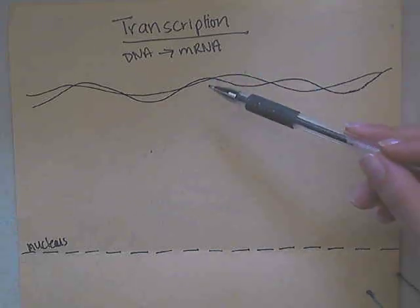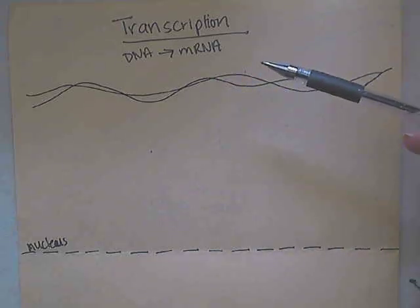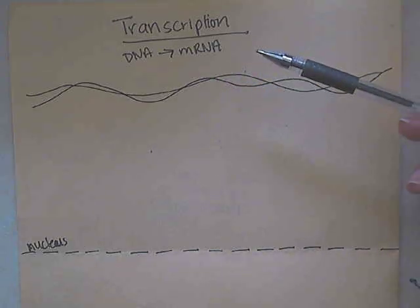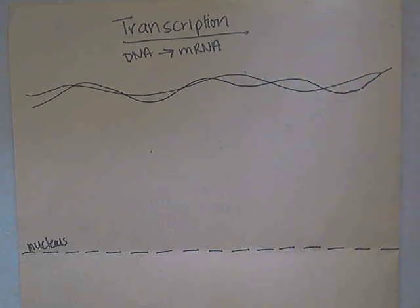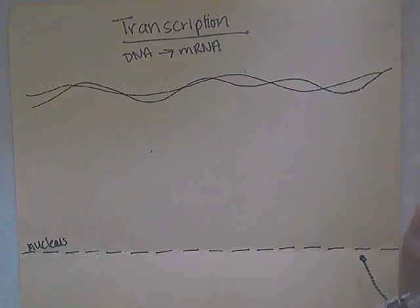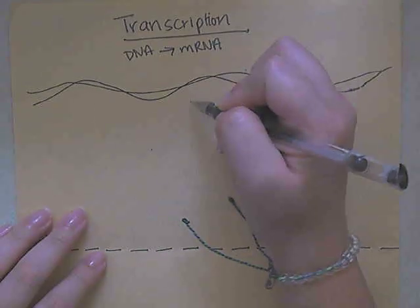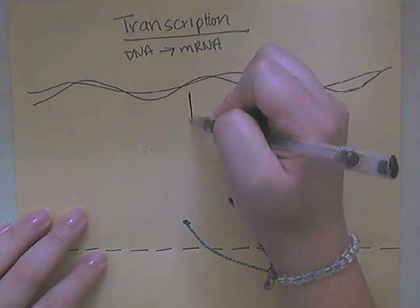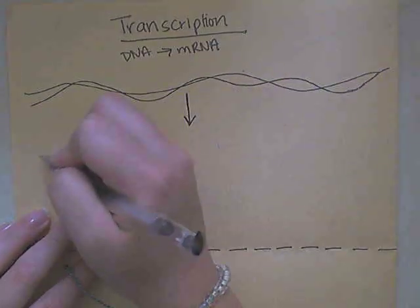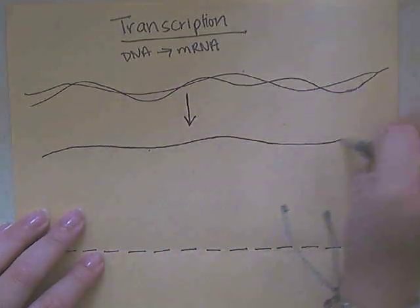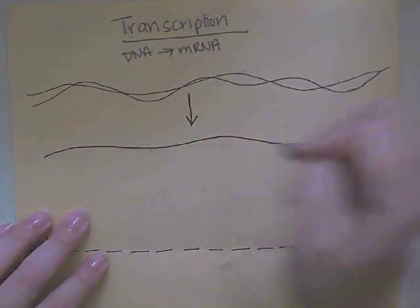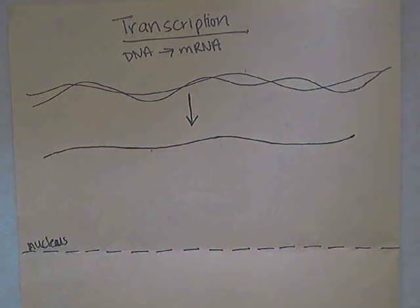Now one of these strands is your actual coding strand, and the other one is your non-coding strand. You just need to know that's the DNA that was going to get copied, and so taking this DNA and converting it into mRNA — a direct copy — is the process of transcription.